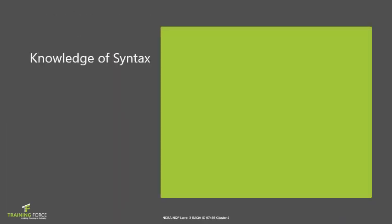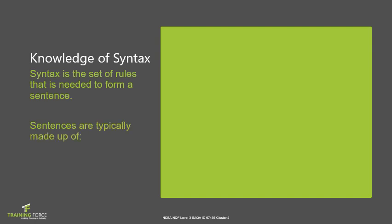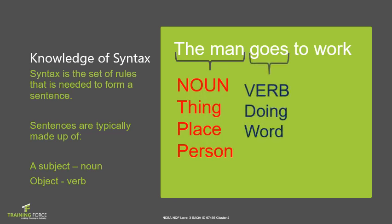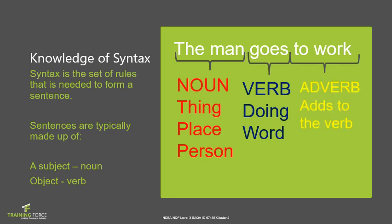Our first technique is the knowledge of syntax. Syntax is the set of rules needed to form a sentence. Sentences are typically made up of a subject, which is generally a noun, and an object, which is a verb. For example: 'The man goes to work.' A noun is a thing, place, or person. The verb tells us what the man is doing. The adverb adds to the verb — so 'to work' adds to 'goes,' telling us where and what the man is doing.